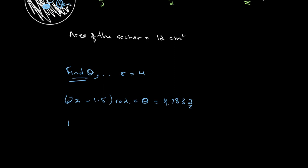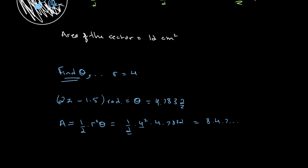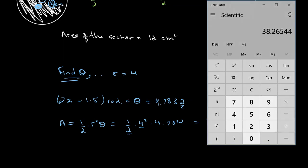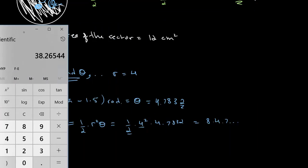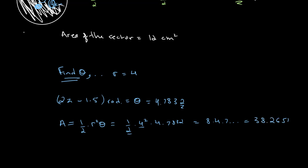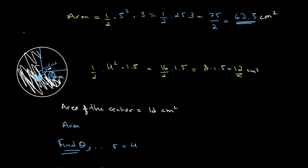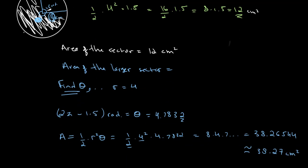Now that we have theta, we plug it into our equation: area equals one half times r squared times theta. So that's one half times 4 squared times 4.7832, which is 16 over 2 times 4.7832, or 8 times 4.7832. Plugging this into our calculator gives us approximately 38.2654, which rounds to 38.27 centimeters squared. So the area of the larger sector is 38.27 centimeters squared.